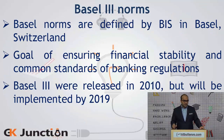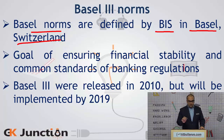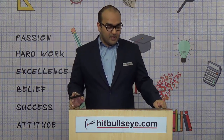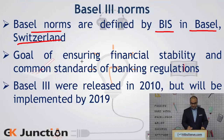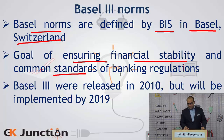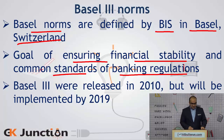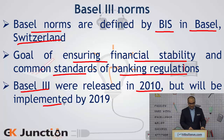Next are the Basel 3 norms. The Basel norms are defined by BIS, that is the Bank of International Settlement in Basel, Switzerland. BIS has as its members all the central banks of the world. They define different norms and practices for the entire banking sector of the world so that banks do not indulge in bad practices which could destabilize them. The goal of the Basel norms is to ensure financial stability and common standards of banking regulations worldwide. Basel 3 is the latest set of norms after Basel 1 and Basel 2, released in 2010 but to be implemented by all banks by 2019.